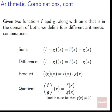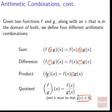Given two functions f and g, along with an x that's in the domain of both, we define four different arithmetic combinations. As long as x is in the domain of both — meaning it doesn't fail, like if we had square root of x we couldn't plug in negative 3 — all of these work well. The sum is f plus g of x, the difference is subtraction, the product fg is f times g, and the quotient is f of x divided by g of x. The quotient also requires that g of x does not equal zero, because we're not allowed to divide by zero.